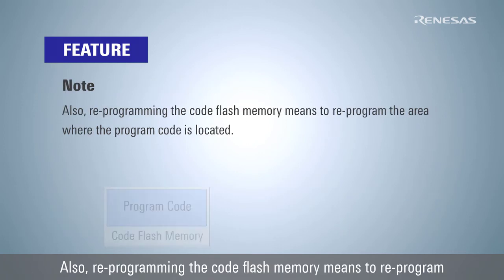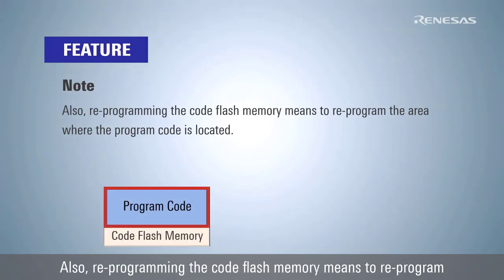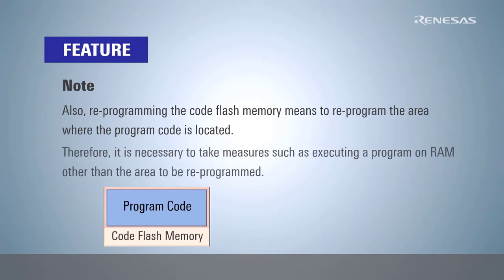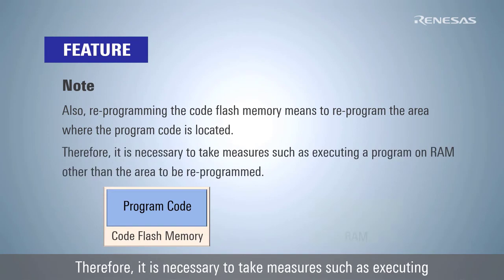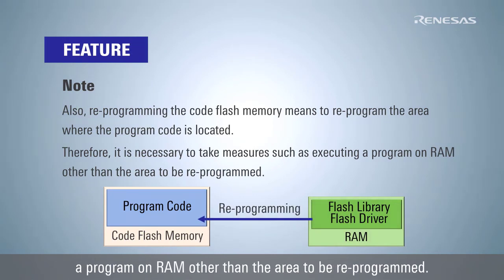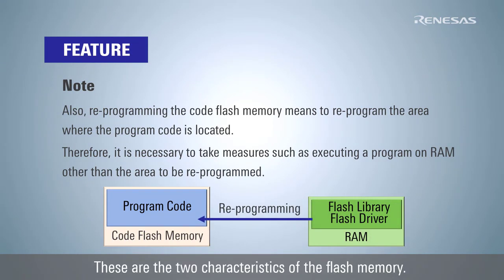Reprogramming the code flash memory means to reprogram the area where the program code is located. Therefore, it is necessary to take measures such as executing a program on RAM other than the area to be reprogrammed. These are the two characteristics of the flash memory.